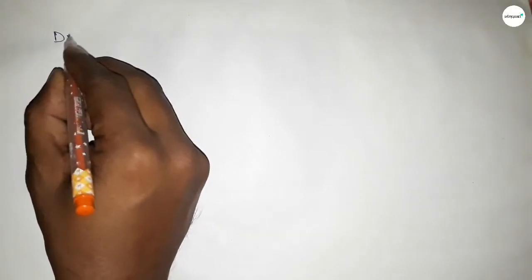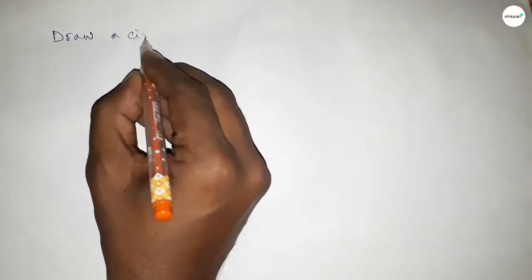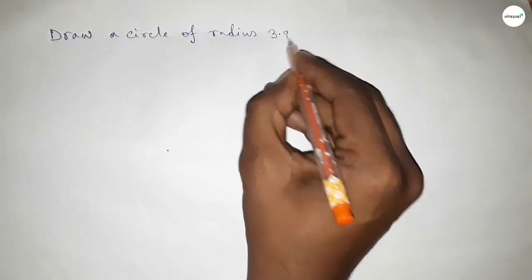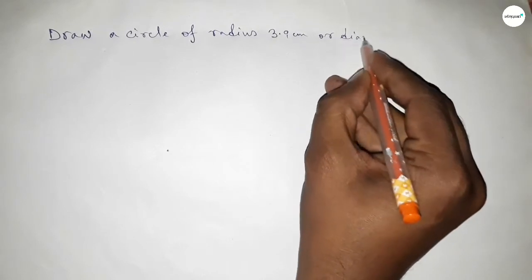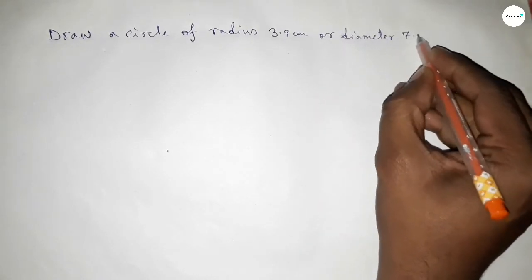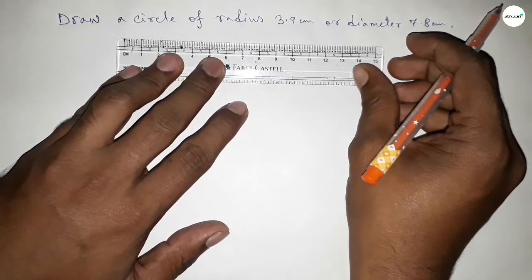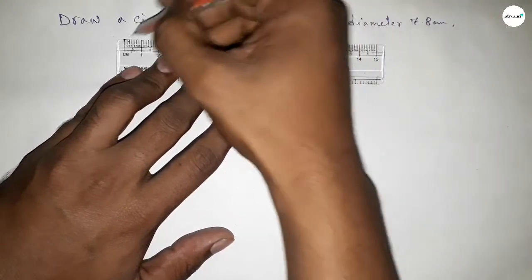Hi everyone, welcome to SI Share Classes. Today in this video we have to draw a circle of radius 3.9 centimeter or diameter 7.8 centimeter. Let's start the video. First of all, drawing here the radius 3.9 centimeter.